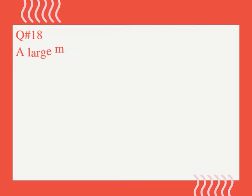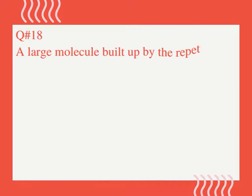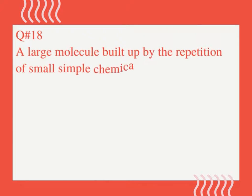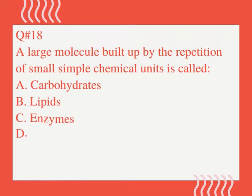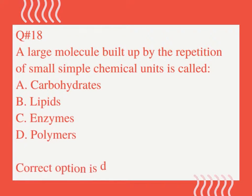Question number 18. A large molecule built up by the repetition of small simple chemical units is called: A. Carbohydrates. B. Lipids. C. Enzymes. D. Polymers. Correct option is D.